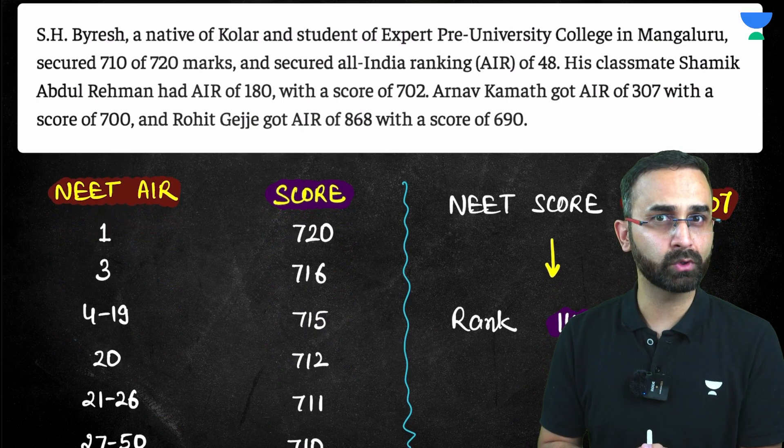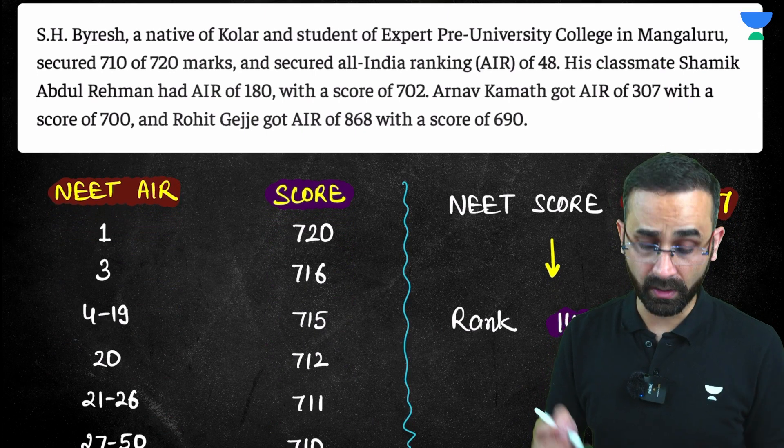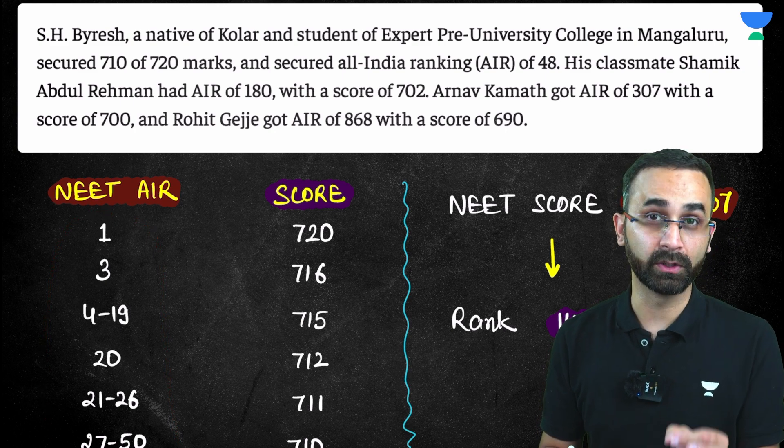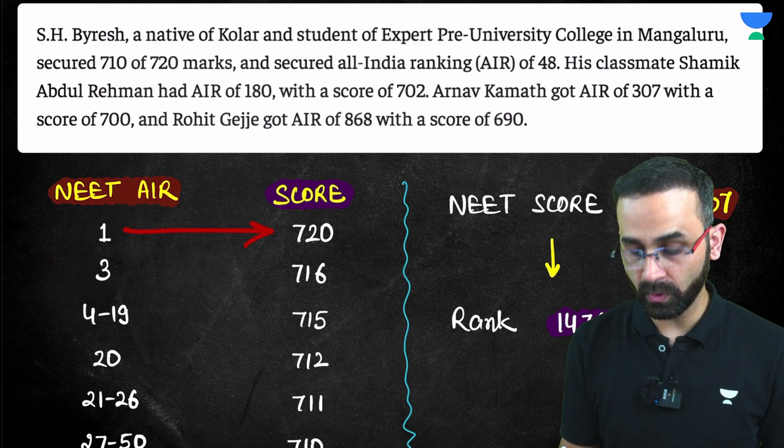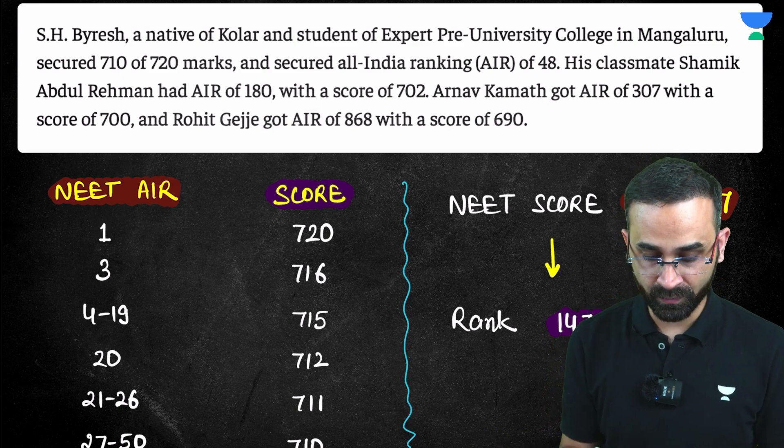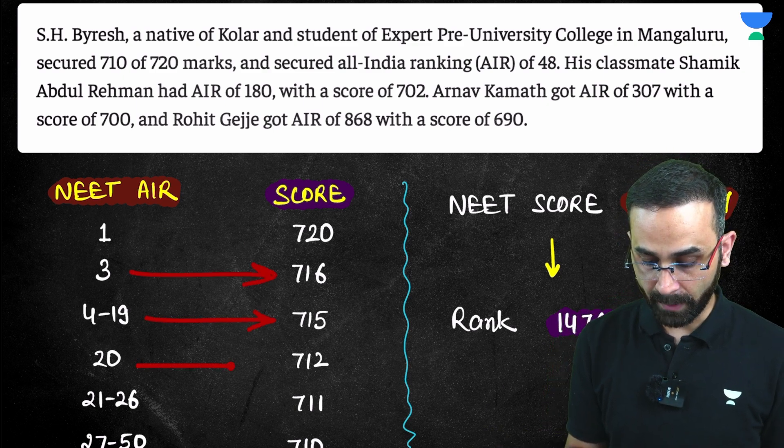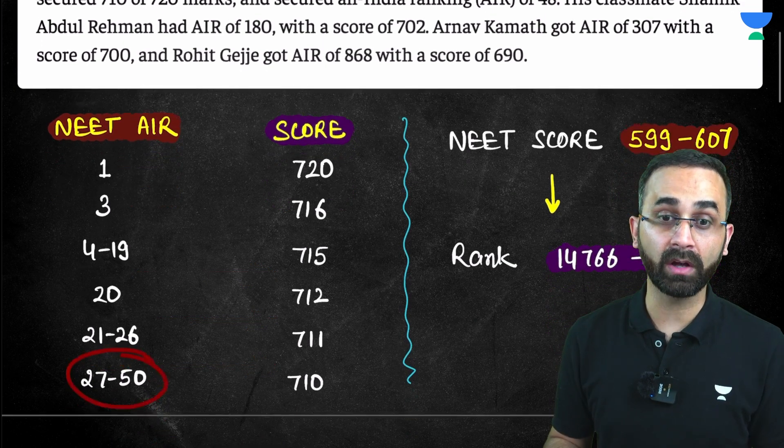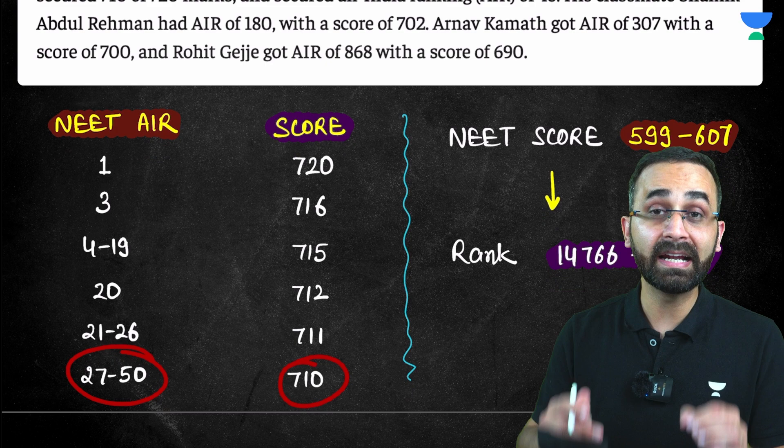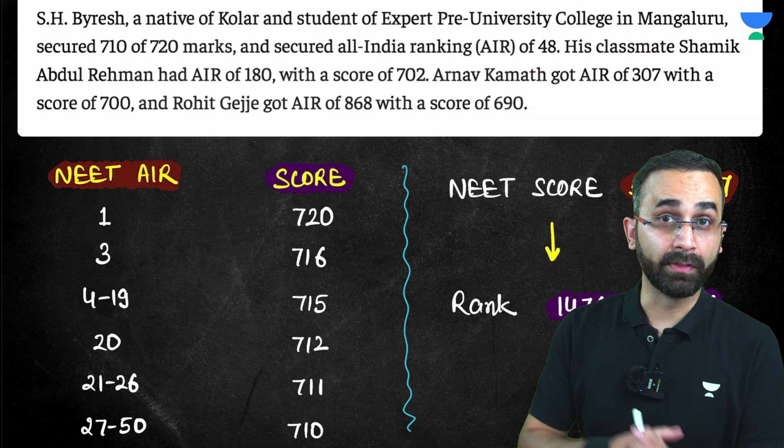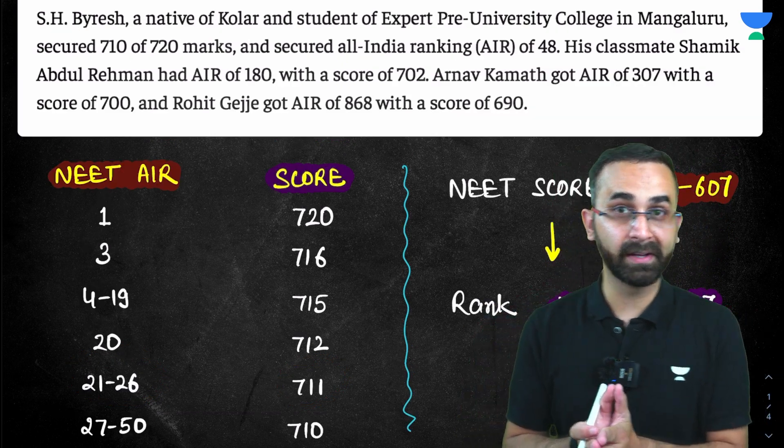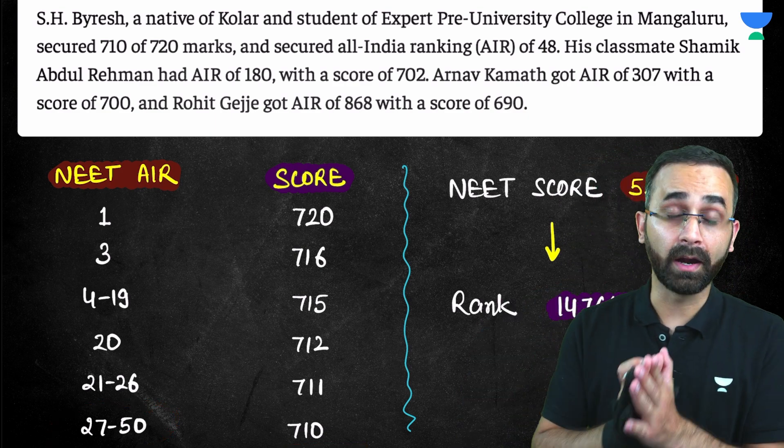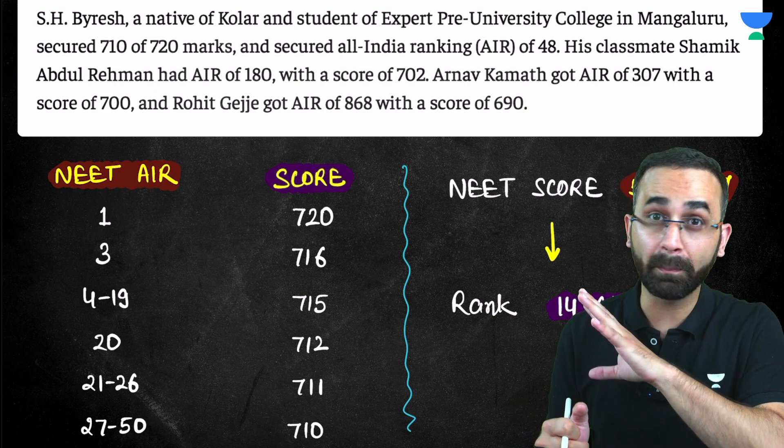Just to give you a clear idea about how much you should be scoring in total, just have a look at the NEET AIR and their score this year 2023. All India rank 1 and 2 had a perfect score of 720. Rank 3: 716, ranks 4 to 19: 715, rank 20: 712, and even the 50th rank was still at 710. Now take a look at the score versus the All India rank. So even if you had scored 710 this year, still under top 50, not under top 10.